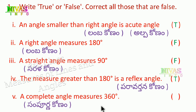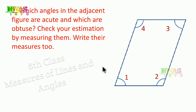Fifth problem: a complete angle measures 360 degrees. A complete angle measures 360 degrees, so this is also true. Next question: which angles in the picture are acute and which are obtuse?